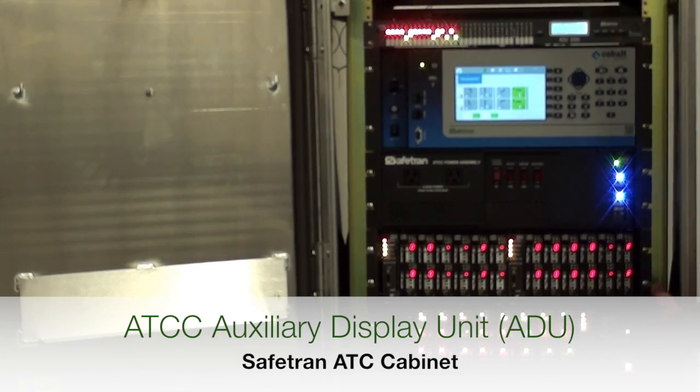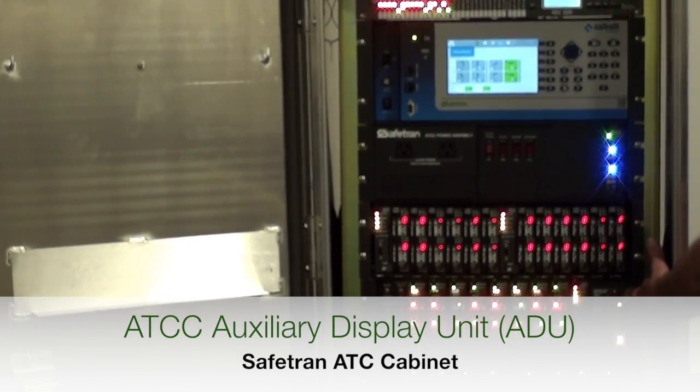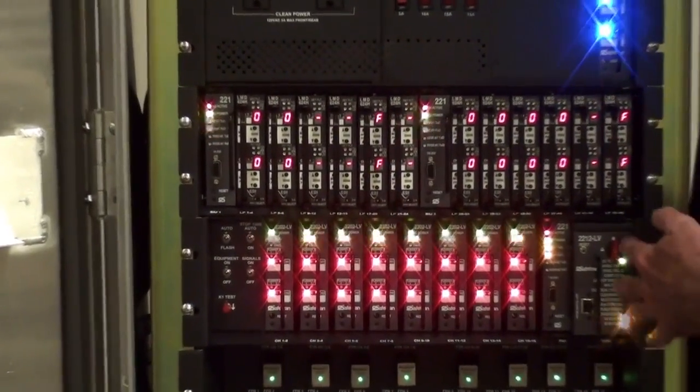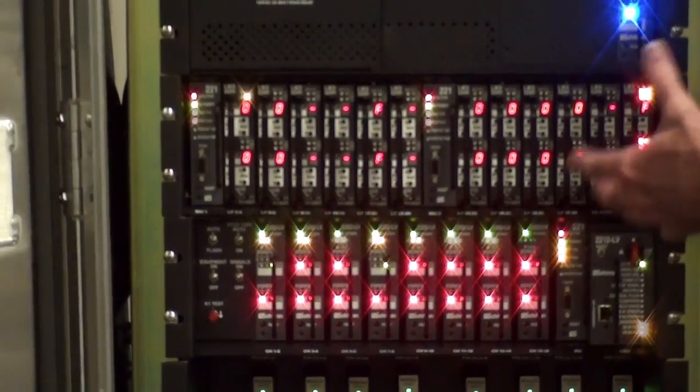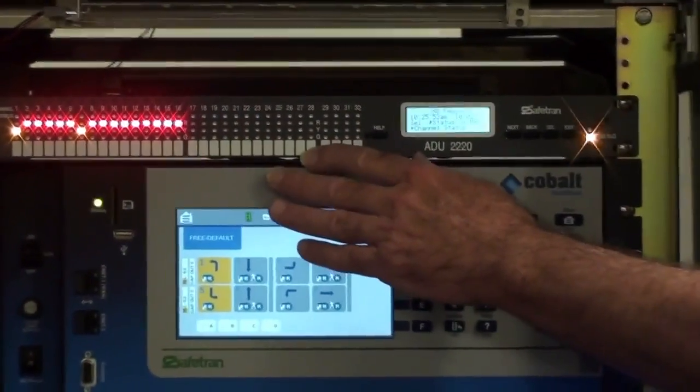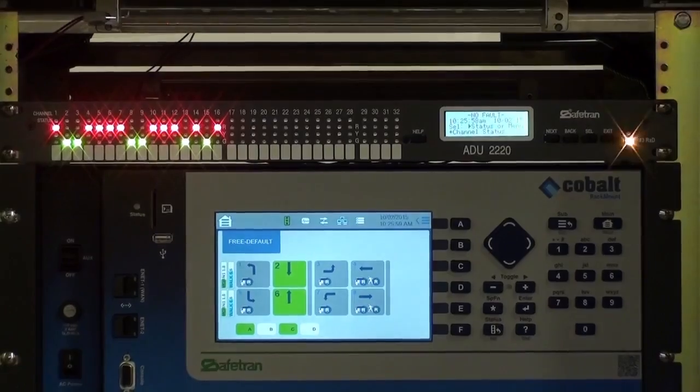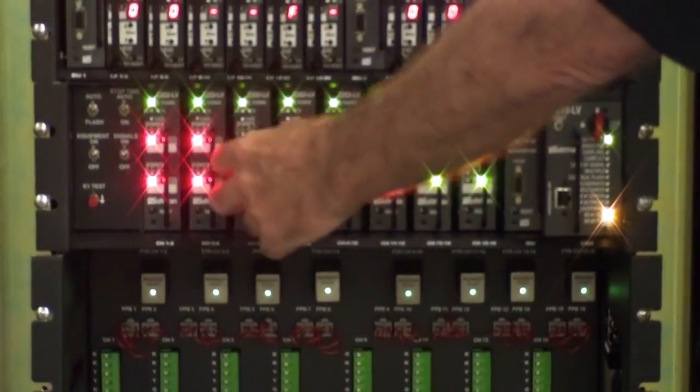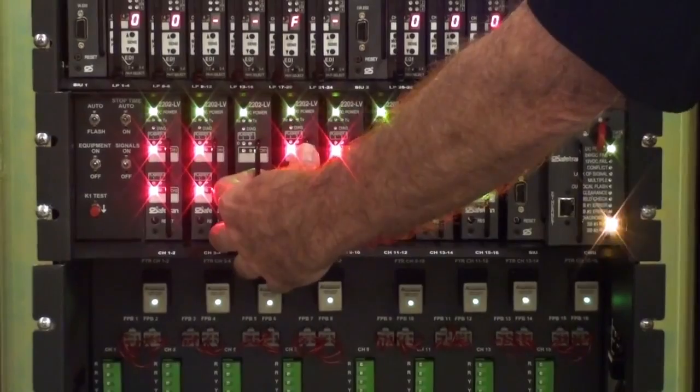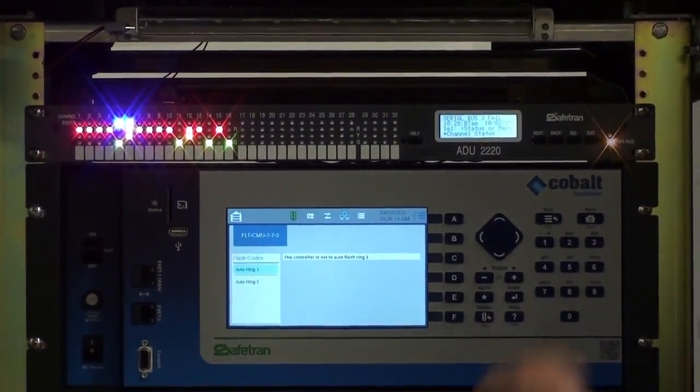The auxiliary display unit, or ADU, is optional, but a very useful diagnostic tool. As you can see, the CMU for the ATC cabinet is quite a bit smaller than CMU or MMUs used in other NEMA or 332 cabinet types. Because of the smaller size of the CMU, the ADU was developed to provide the full set of intersection display indicators and includes additional diagnostic capabilities. For example, if a load switch goes bad or is removed, the ADU will immediately display which load switch is not functioning with these blue lights. The screen also shows the voltage and current levels of each output.